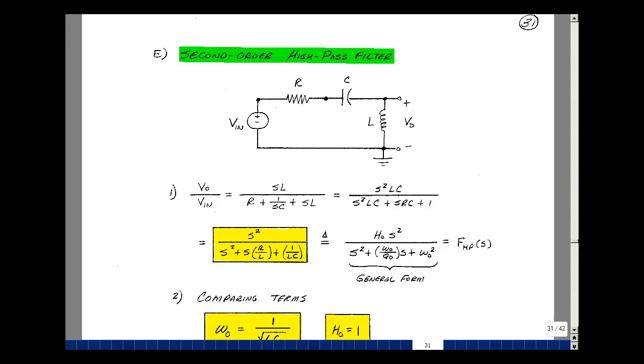This lesson deals with a second-order high-pass filter. You can find these notes in the ECE202 e-book in Chapter 12, starting on page 31.